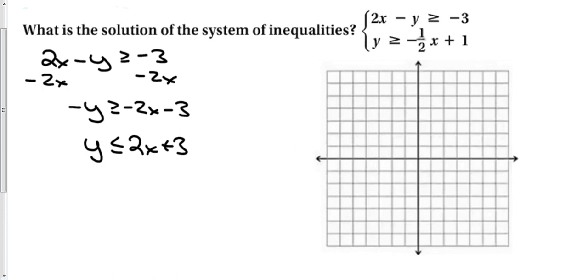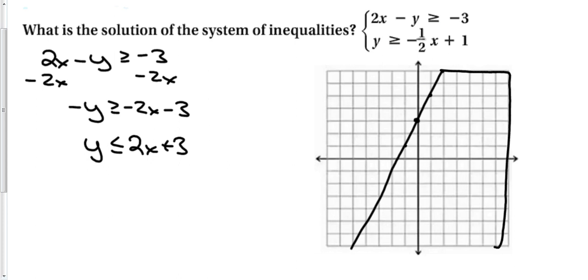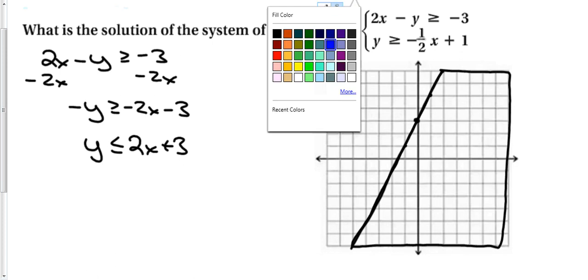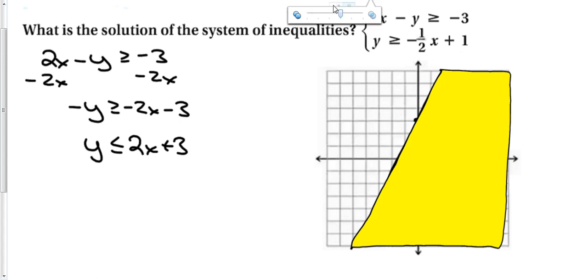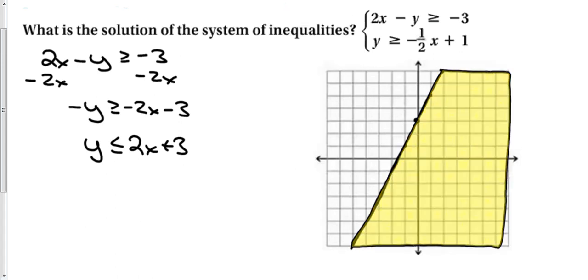Now that we have slope-intercept form, let's graph. We start with a dot at 3 on the y-axis, and the slope is 2 — up two, right one. Because this is 'or equal to,' we make a solid line. Remember from last chapter: we have a less-than inequality, so we shade below the line. I'll use the smartboard's fill feature to fill in that region in yellow — that's the solution region for the first equation.